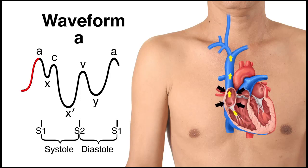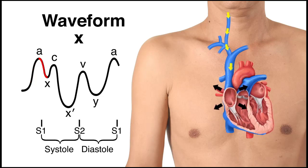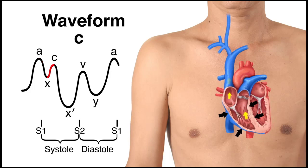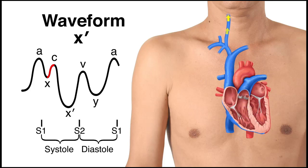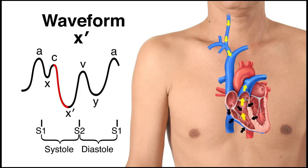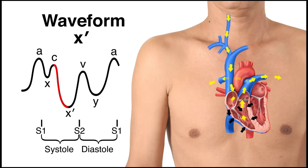The A wave corresponds to right atrial contraction; its peak denotes the end of atrial systole. The X' descent denotes right atrial relaxation. The C wave denotes right ventricular contraction and closure of the tricuspid valve. The X' descent, which begins during ventricular systole, reflects the downward movement of the right atrial floor and contraction of the right ventricle.